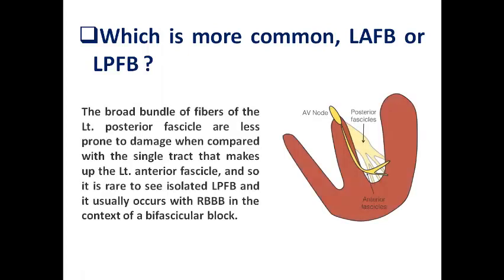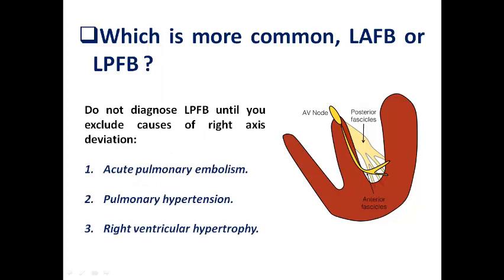Second question: which is more common — left anterior fascicular block or left posterior fascicular block? The broad bundle fibers of the left posterior fascicle are less exposed to damage compared to the single track of the left anterior fascicle. Therefore, left anterior fascicular block is more prone to occur. Isolated left posterior fascicular block is rare, and usually occurs with right bundle branch block in the context of bifascicular block. Additionally, we must exclude other causes of right axis deviation — such as pulmonary embolism, pulmonary hypertension, and right ventricular hypertrophy — before diagnosing left posterior fascicular block alone.